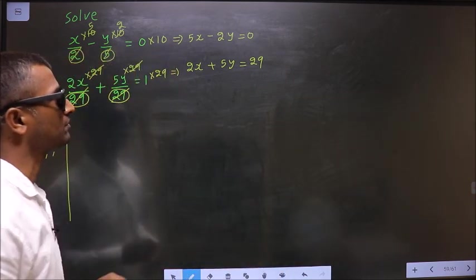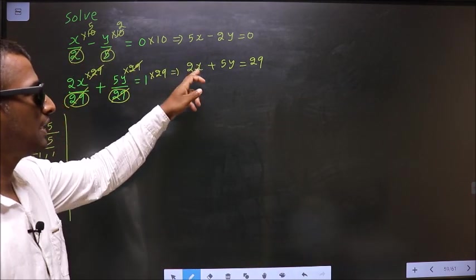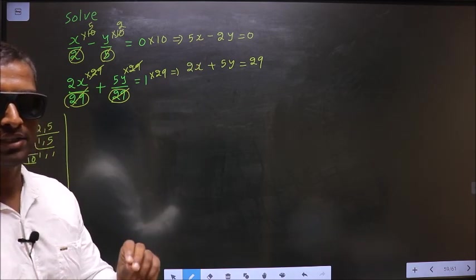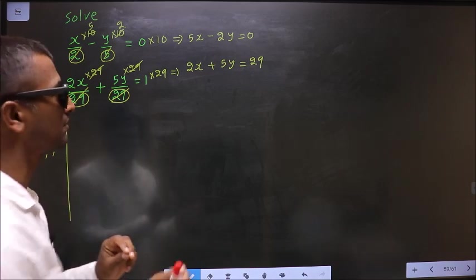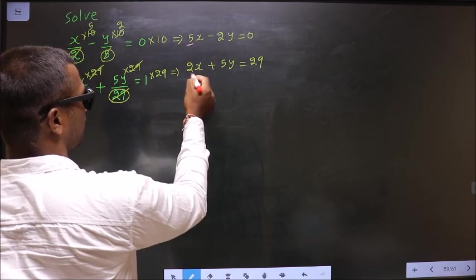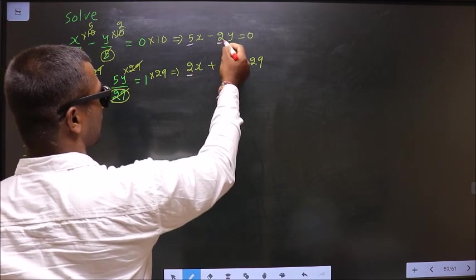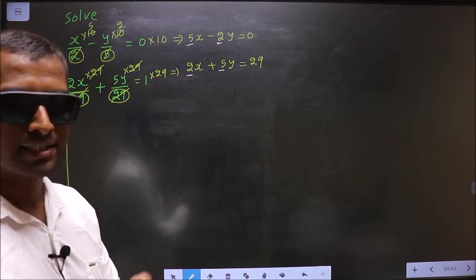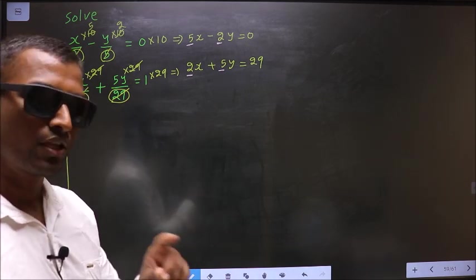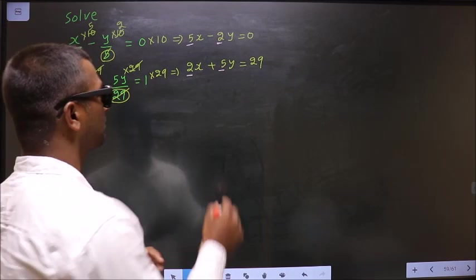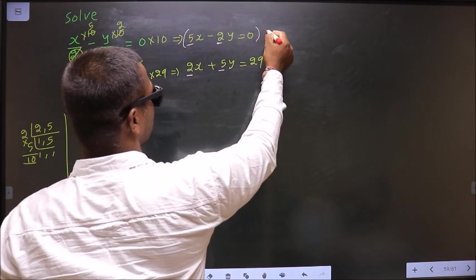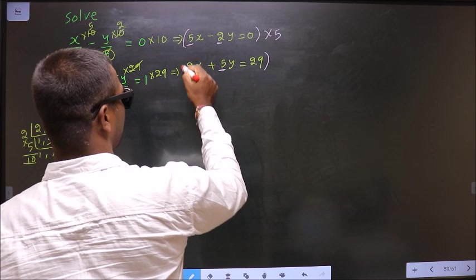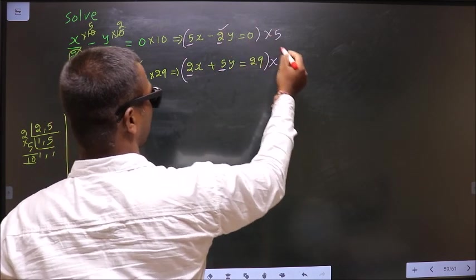Now to solve these equations, I should make either x-coefficient same or y-coefficient same. Here x-coefficient is 5, here it is 2. Here y-coefficient is 2, here y-coefficient is 5. So now I have decided to make y-coefficient same. So to make y-coefficient same, I should multiply this equation with this number 5 and this equation with this number 2.